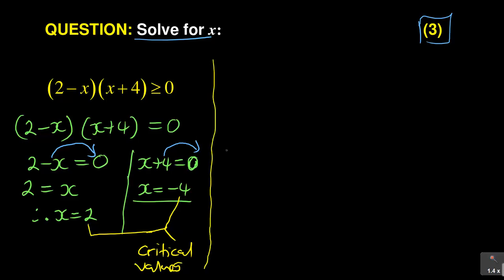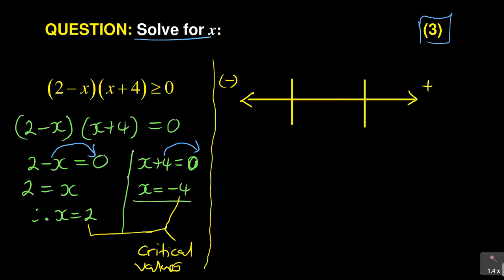You will use these two critical values when you sketch your number line graph. Draw a number line and place your critical values on it: x equals negative 4 and x equals 2. Remember that on a number line, this direction is negative and this direction is positive. So negative 4 comes first, and then 2, just like on a normal number line.